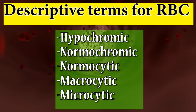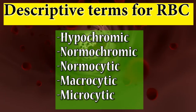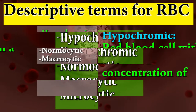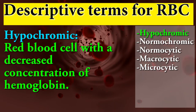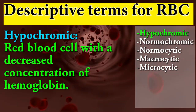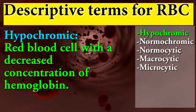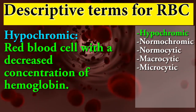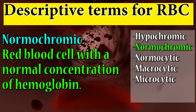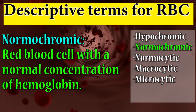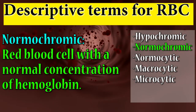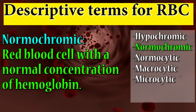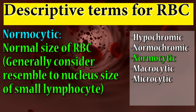Before going further, you need to know these key terms. Hypochromic means a red blood cell with a decreased concentration of hemoglobin. Normochromic means a red blood cell with the normal concentration of hemoglobin.